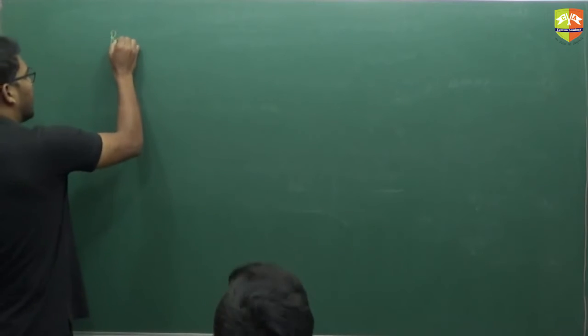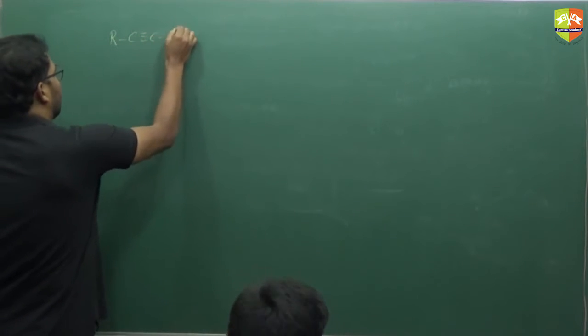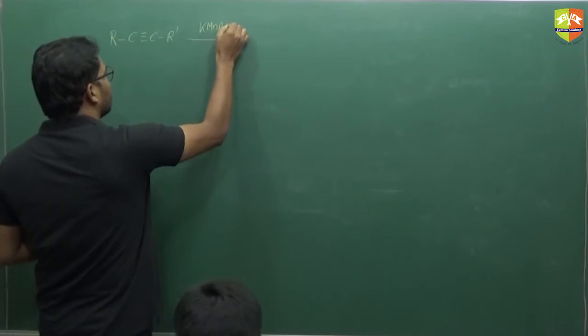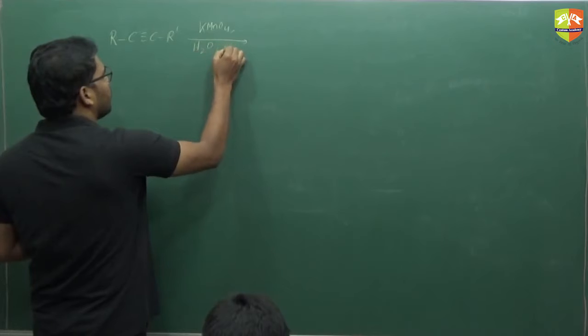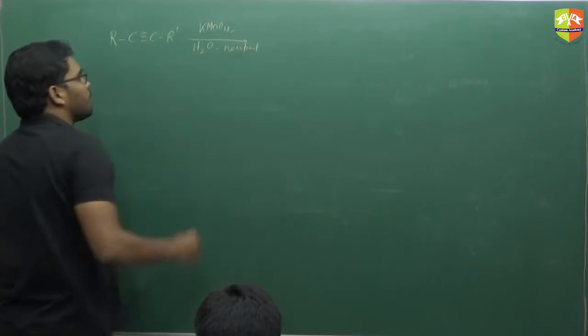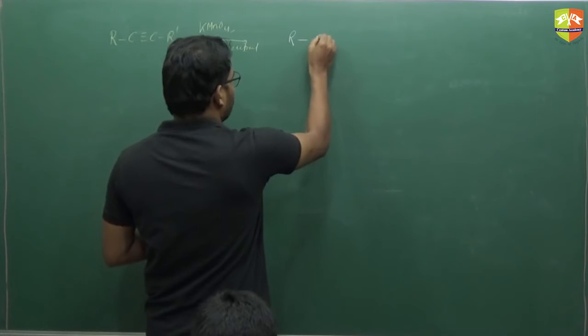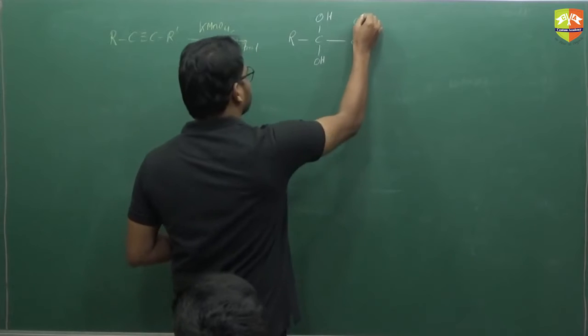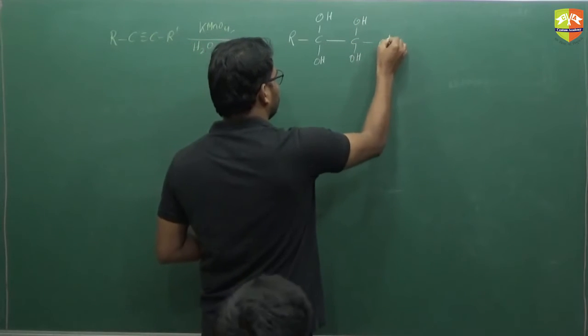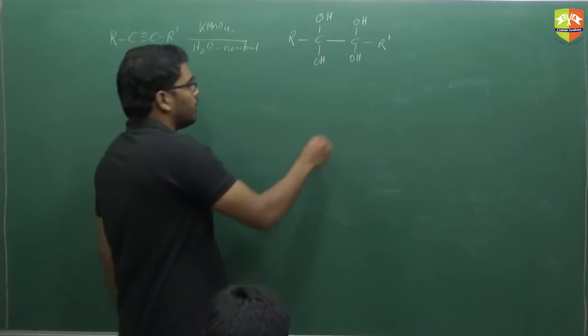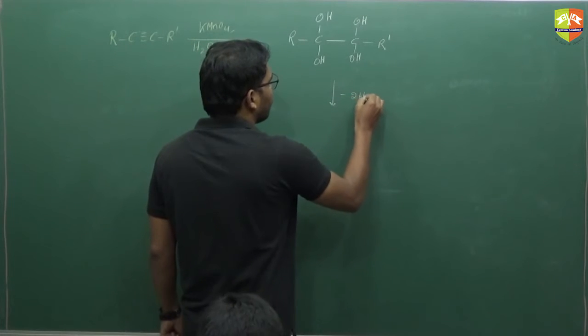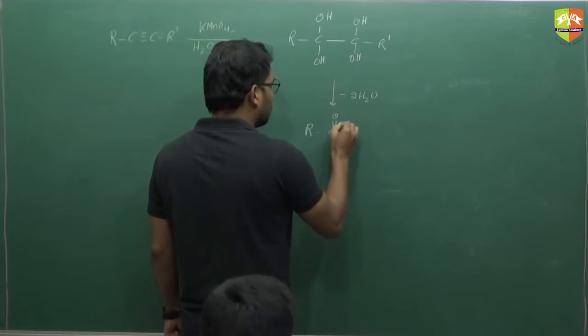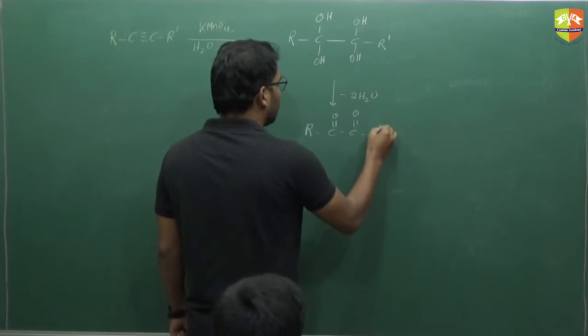This reaction takes place in neutral as well as in basic medium also. Suppose the alkyne is this, and when this is allowed to react with KMnO4 with H2O aqueous KMnO4, medium is neutral. The product is R-C(OH)(OH)-C(OH)(OH)-R', and then from this two H2O molecules go out and we end up getting C=O-C=O R', diketone.